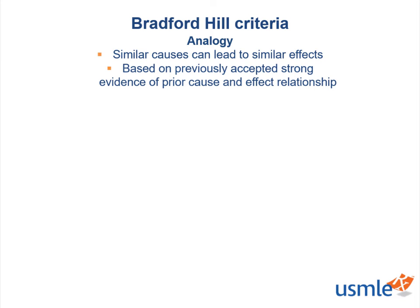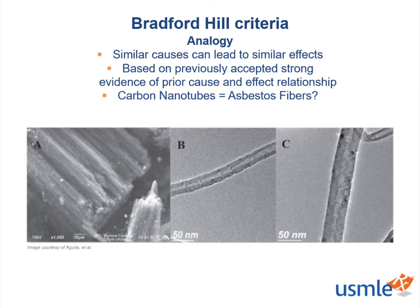Last but not least, we have the analogy criterion. If there is a strong established relationship for one cause and effect process, a similar cause can be expected to have a similar effect, even if there is weaker evidence. Consider carbon nanotubes: these respirable fibers are similar in morphology to asbestos and would be expected to have the same deposition, inflammation, and fibrotic response if inhaled. Multiple studies have shown similarities in response. Therefore, despite carbon nanotubes not having as robust investigations as asbestos, prior studies demonstrate a strong assumption for causal relationships between carbon nanotube exposure and lung inflammation and disease.